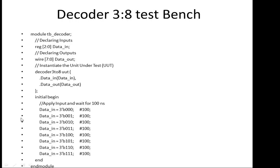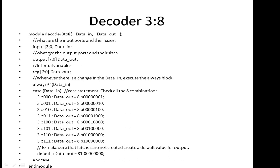This is how to write the testbench for a 3-to-8 decoder. If you want to extend it to a 4-to-16 decoder, make changes to the bit widths here, here, and here. The input becomes 4 bits [3:0] and the output becomes 16 bits [15:0], and you write all the corresponding combinations.